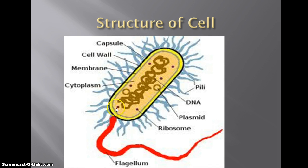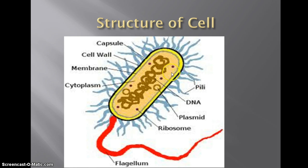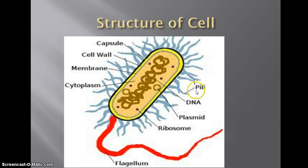We talked in class about there being four or five basic structures: the cell wall, the cell membrane, the cytoplasm, ribosomes, and the DNA. Then there are some other structures we need to be aware of: we have our capsule, the flagellum or flagella, the plasmid — which we covered when we talked about conjugation — and then we have the pili, or pilus.